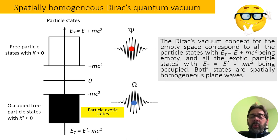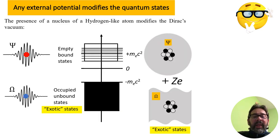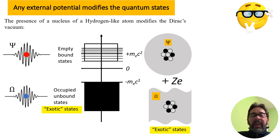The Dirac quantum vacuum concept for empty space corresponds to all the particle states with energy E plus MC² being empty, and all the exotic particle states with energy E prime minus MC² being occupied. Both states are spatially homogeneous. For this reason, the Dirac quantum vacuum is spatially homogeneous. However, any external potential modifies the quantum state. The presence of the nucleus of a hydrogen-like atom modifies the Dirac vacuum: the states with energy E plus MC² become spatially localized, while the exotic states of the electron in hydrogen-like atoms are spatially delocalized.